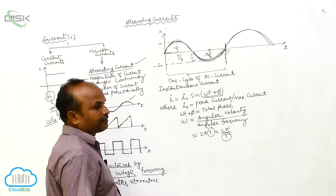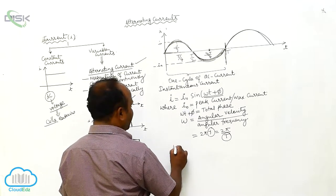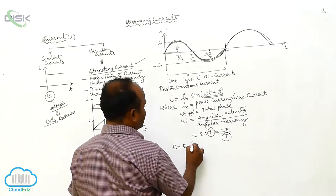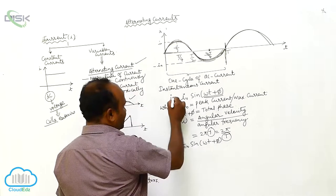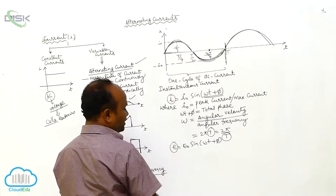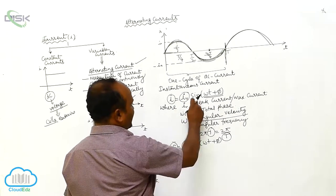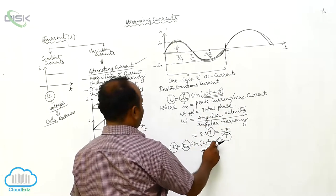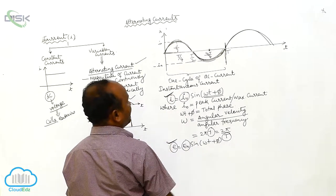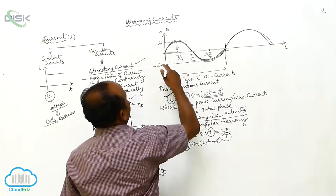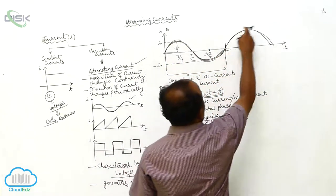AC current has been defined. There must also be an EMF. EMF is equals to E₀ sin(ωt + π). Here, E is the instantaneous EMF and E₀ is the maximum EMF. I versus t is a sinusoidal graph, and E versus t is also a sinusoidal graph.